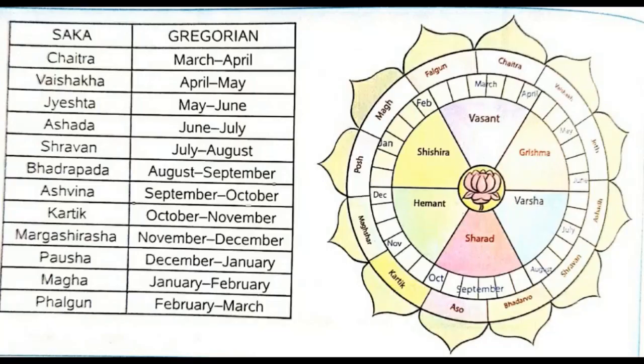The Saka calendar is the official calendar of India. It is used along with the Gregorian calendar and lists the religious, ceremonial, festive, or auspicious days of India. The Saka calendar starts from the 78th year of the Gregorian calendar.